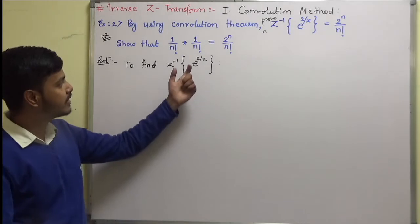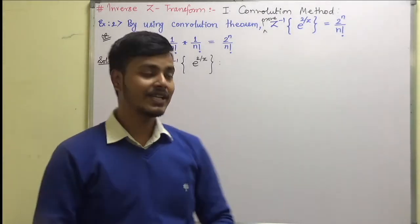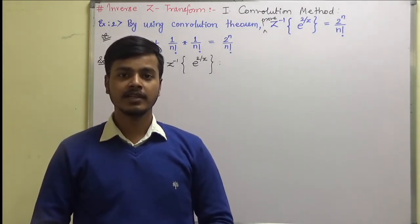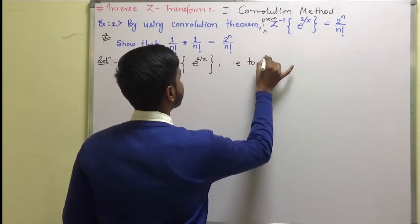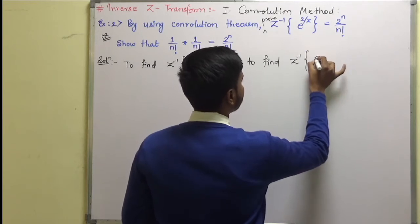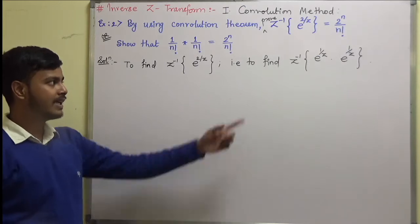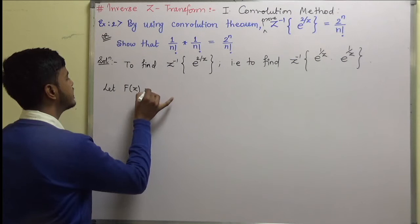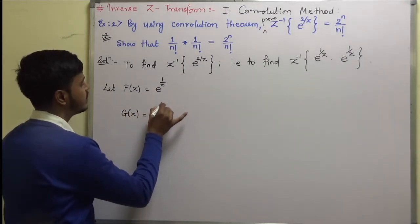How can we write e to the power 2/z as a product? I want you to pause the video for a few seconds, try to write this as a product of two functions, and then resume the video. You might have written e^(2/z) as e^(1/z) times e^(1/z). Let us take one function to be f(z) and the second one to be g(z).